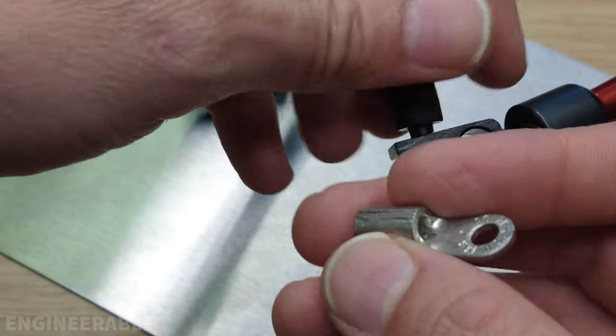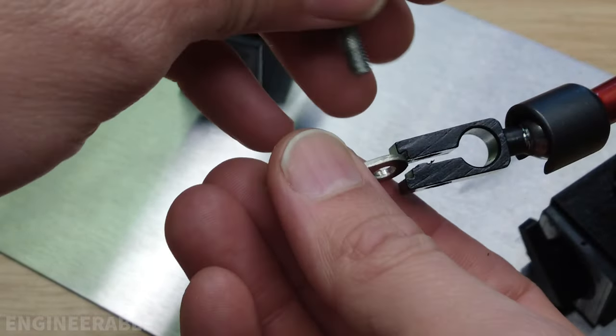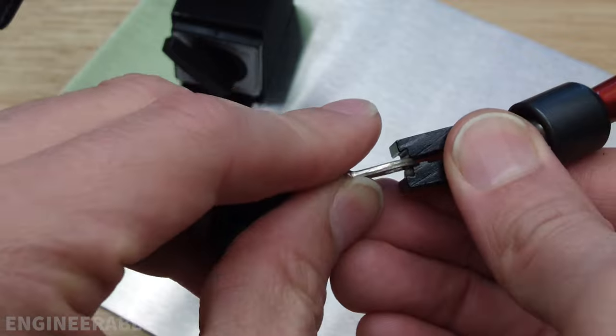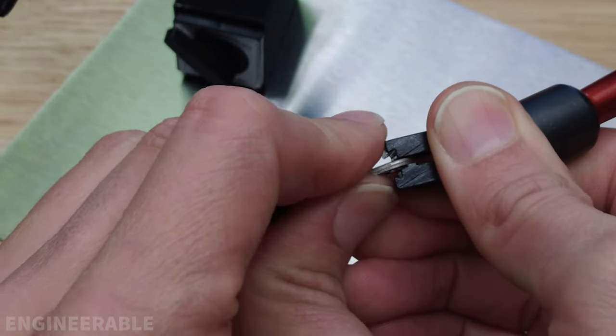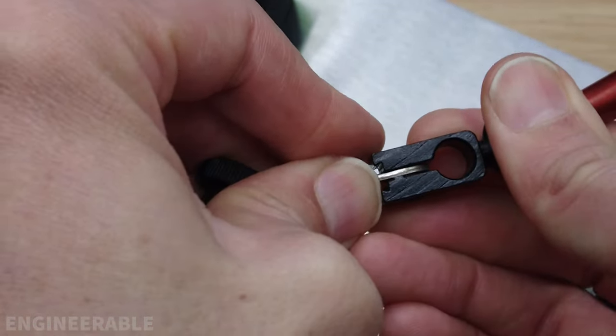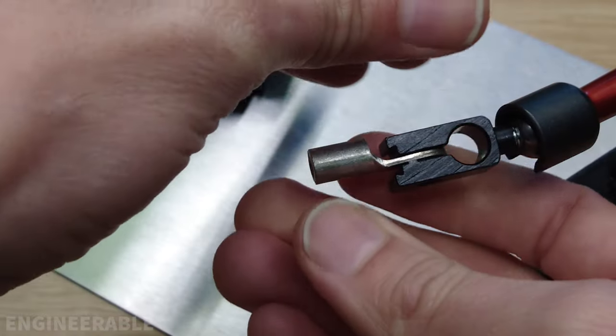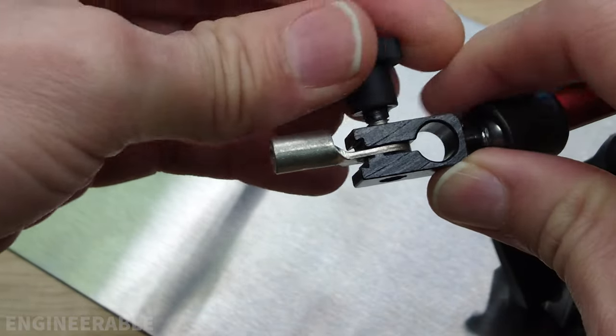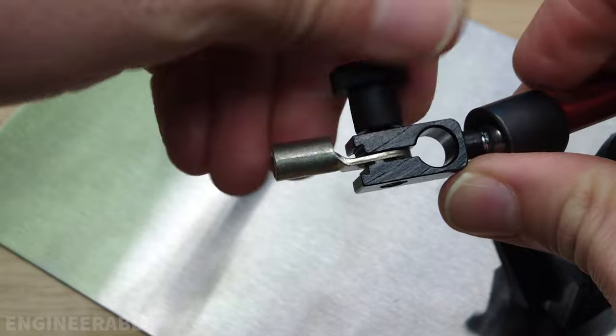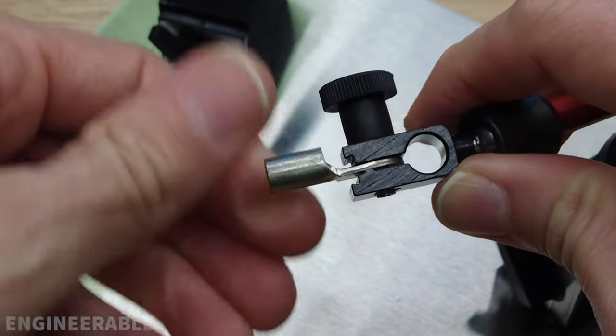With a ring terminal you can remove the screw, slide the ring terminal in place. This one just barely fits in there and it's nice and strong, and then you can pass the screw back through the hole in the ring terminal and tighten it down to hold in place.